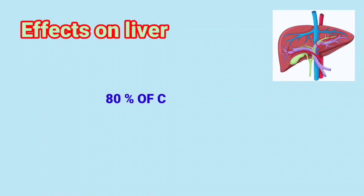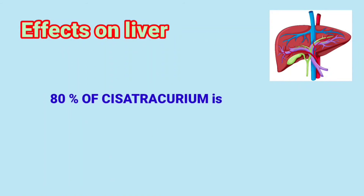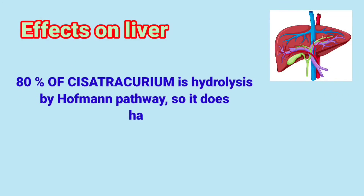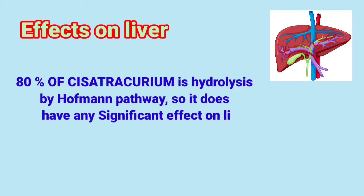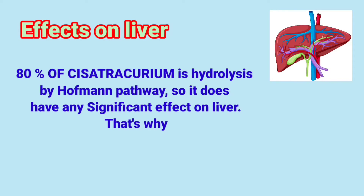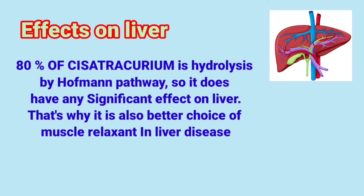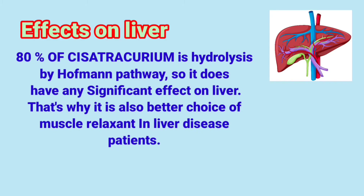Effects on Liver: 80% of Cisatracurium is hydrolyzed by the Hoffman pathway, so it doesn't have any significant effect on the liver. That's why it is also a better choice of muscle relaxant in liver disease patients.